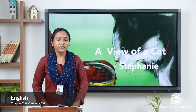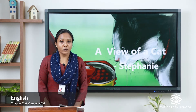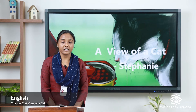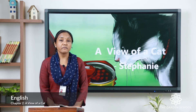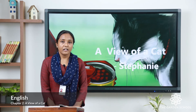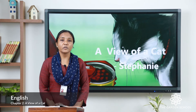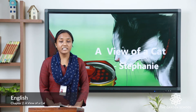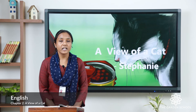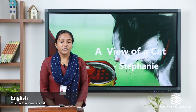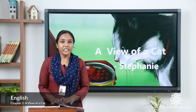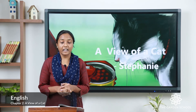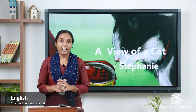Before that I will give you a short summary. This poem 'View of a Cat' is written by the poet named Stephanie. She tells about the life of a cat — the cat describes its daily routine in the poet's house, including chasing a mouse and sharpening its claws. The poem ends with a note on the bond of love between the poet and her pet.